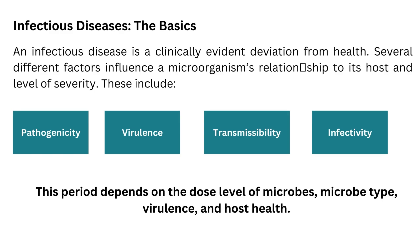Infectious disease — the basis. Now we have an idea of how infectious disease develops and what factors and steps are involved in this mechanism. An infectious disease is a clinically evident deviation from health. Several factors influence a microorganism's relationship to its host and level of severity, including pathogenicity, virulence, transmissibility, and infectivity. This period also depends on the dose level of microbes, microbe types, virulence, and host health. These factors will be discussed in detail in the next slides.